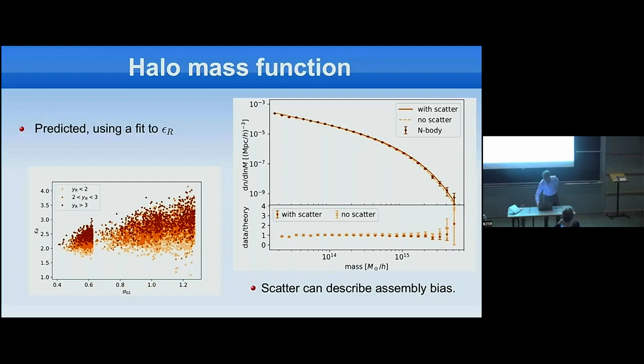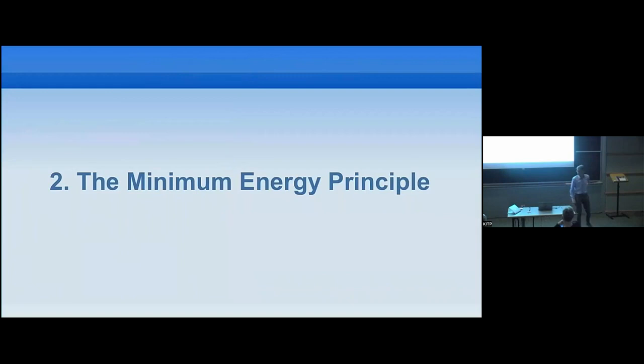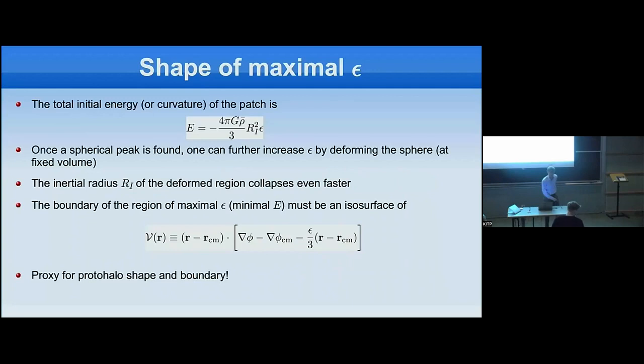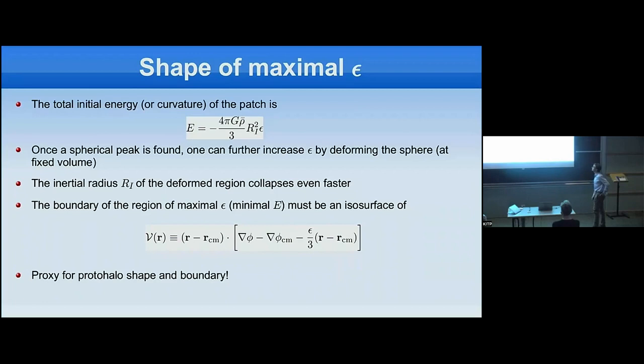With a good model for the scatter, one can study the assembly bias of the model. Now I want to turn to the minimum energy principle. The energy of a patch is proportional to minus the energy over-density, so maximizing the energy over-density — looking for peaks — is equivalent to minimizing the energy and minimizing the collapse time of the patch.